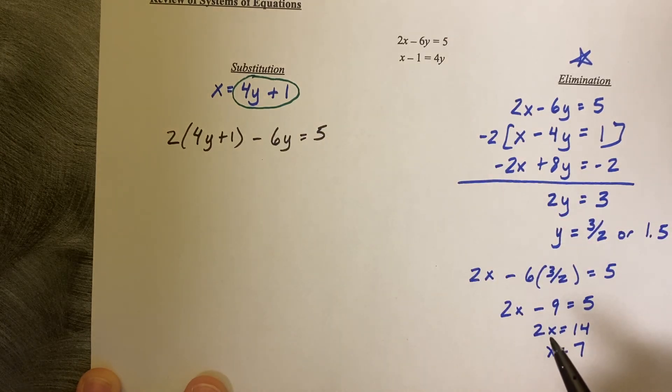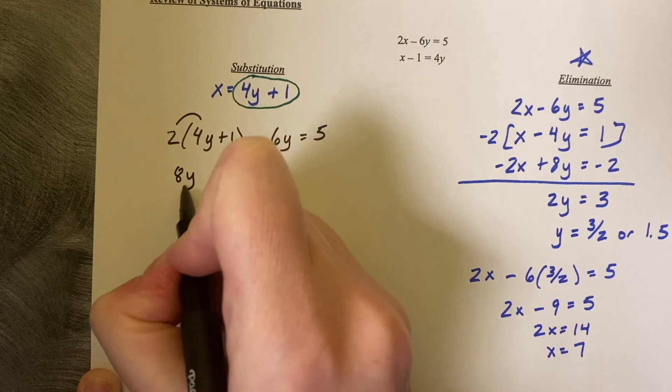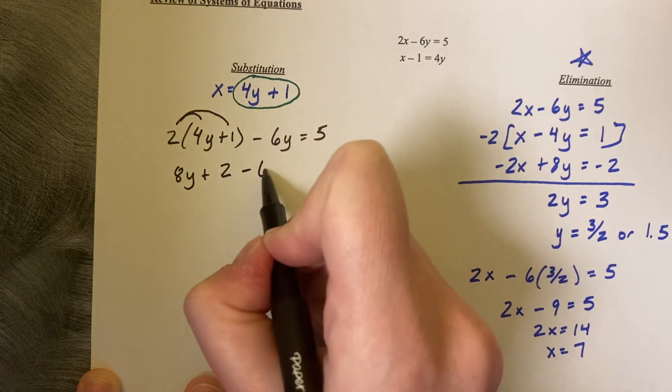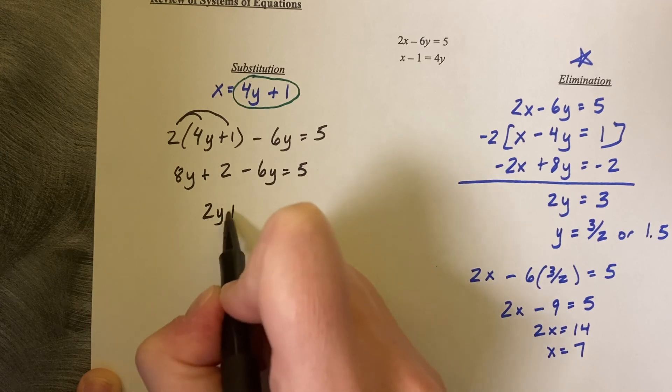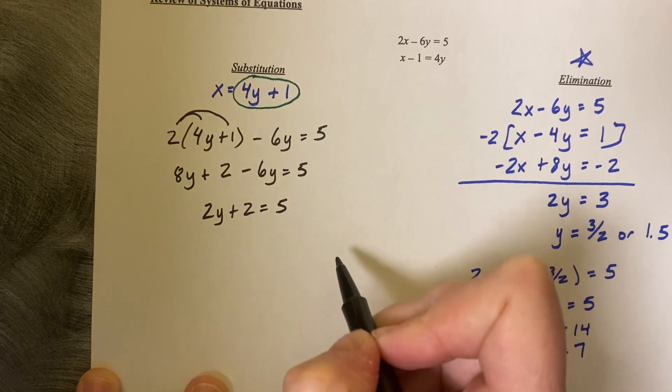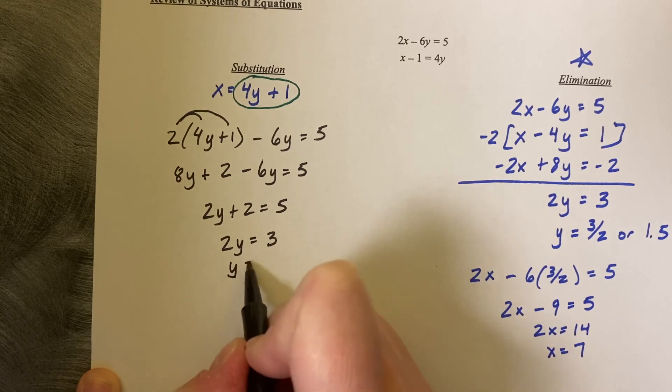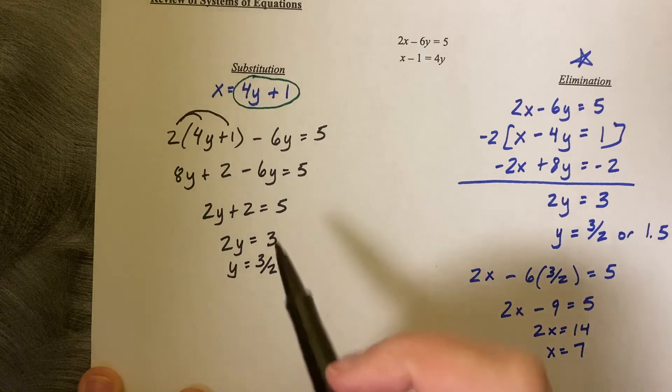So 2 times X but it's not X anymore it's 4Y plus 1 minus 6Y equals 5 and now we can distribute and solve. 2 times 4Y is 8Y plus 2 times 1 is 2 minus 6Y equals 5. 8 minus 6 is 2Y plus 2 equals 5, 2Y equals 3 and Y equals 3 halves.